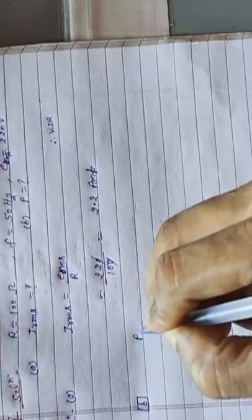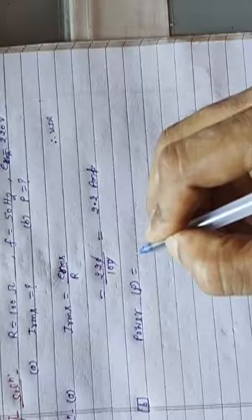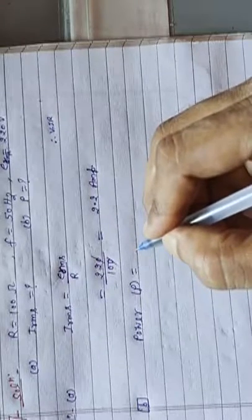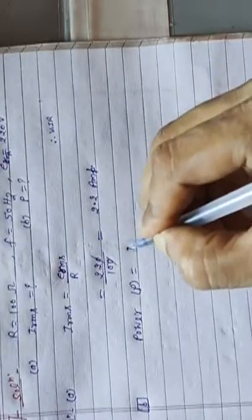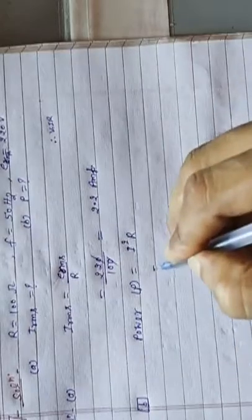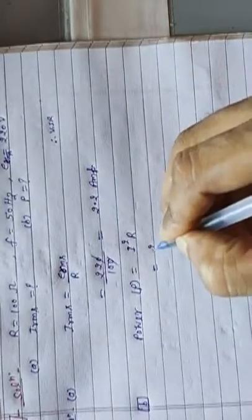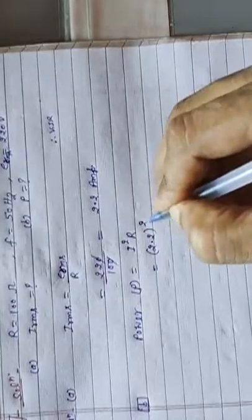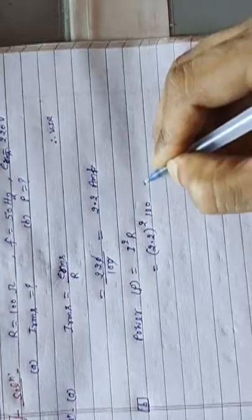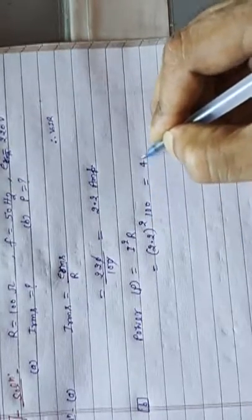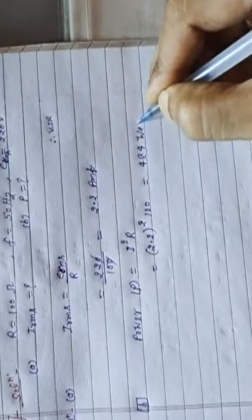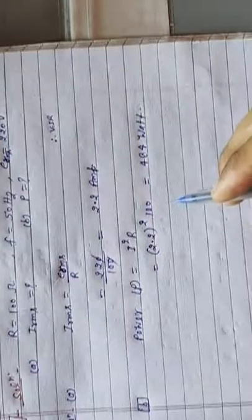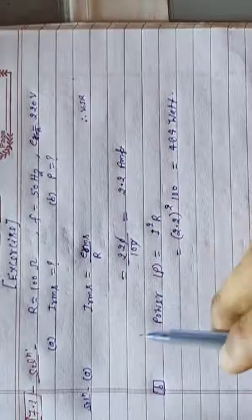Next part B. This is the solution of part A. Next part B, power. Power P, we have the formula of power P equals I square R. I, what is the value of I? I RMS value we already calculated in part A, 2.2. The whole square and value of R is 100. Calculated: 484 watt. This is your answer of part B and this is the solution of question number 7.1.